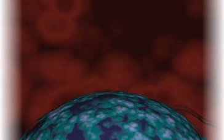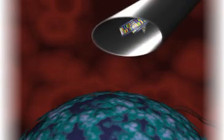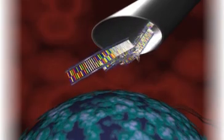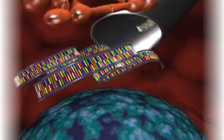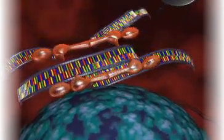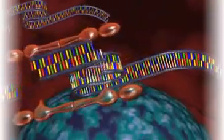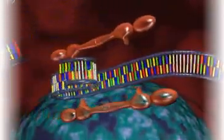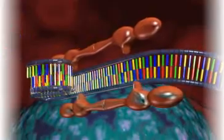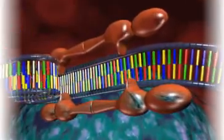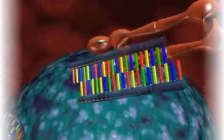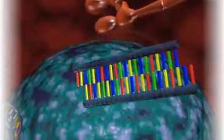When long double-stranded RNAs enter a cell, they are recognized and cleaved by DICER, which is a member of the RNase III family of double-stranded RNA-specific endonucleases. Cleavage by DICER creates short double-stranded RNAs that are characterized by two nucleotide-long 3' overhangs. These are called small interfering, or siRNAs.